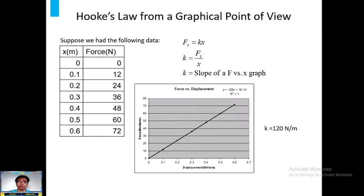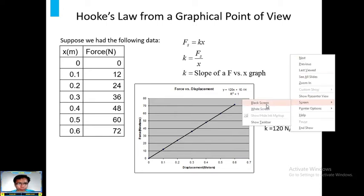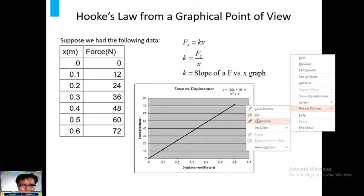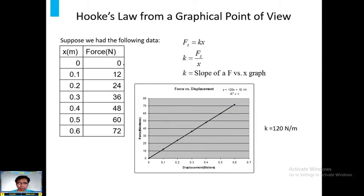Hooke's law can be viewed from a graphical point of view. Remember that Hooke's law is Fs equals to Kx. This means that Kx is directly proportional to your Fs or the force but in the opposite direction. So K is equals to Fs over X. In this case, K is the slope of a F versus X graph. As you can see in this table, because they have a directly proportional relationship.